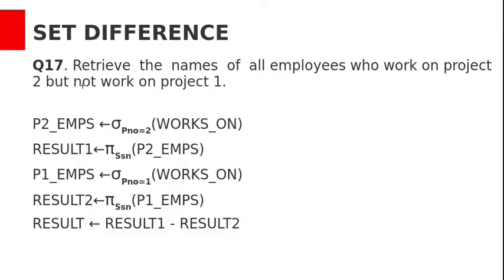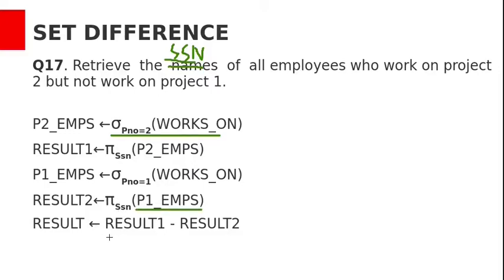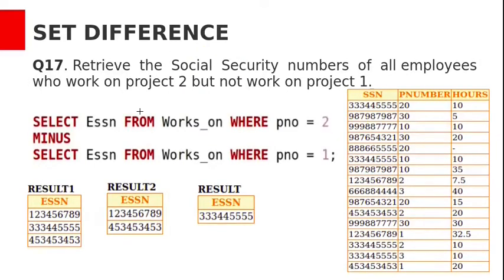Let us see another query: retrieve the SSN values of all employees who work on project 2 but not on project 1. First, select all employees working on project number 2 using sigma P_number = 2 on the works_on relation, then project SSN from those employees. Second, select employees working on project number 1 using sigma P_number = 1 on works_on, then project SSN. The result is result 1 minus result 2.